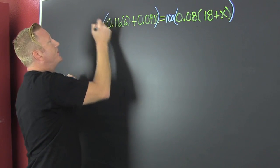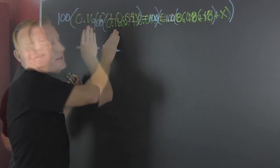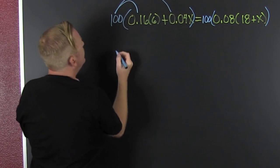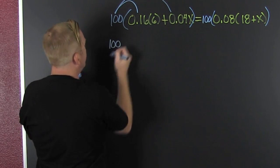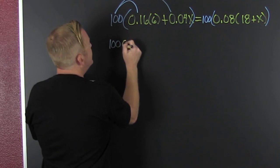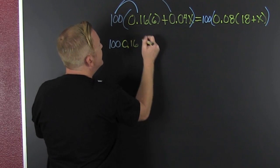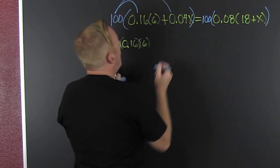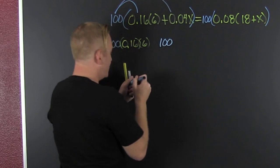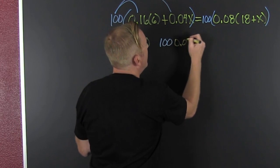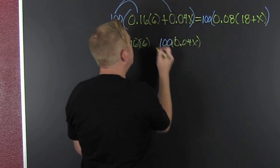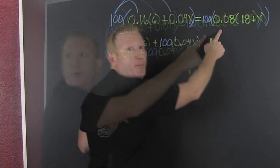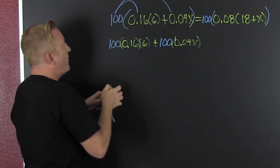So I'm going to multiply this side by 100, and I'm going to multiply this side by 100. Now let's do it. And that's 100 times 0.16 times 6, and then that's 100 times 0.04x.